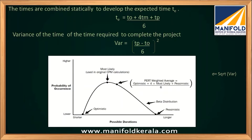PERT is also capable of calculating the variance and standard deviation, which tells us the spread. For example, we might say a project will complete within 22 days, but with PERT we can say it will complete within 22 days with a certain probability. PERT uses a beta distribution — not a bell-shaped curve — which will be discussed further in statistical quality control.